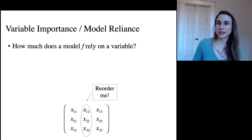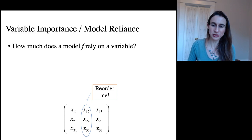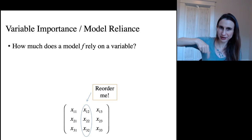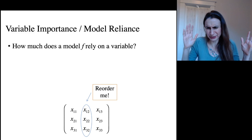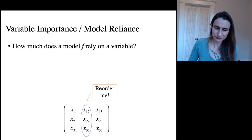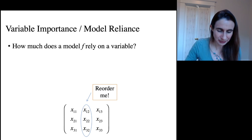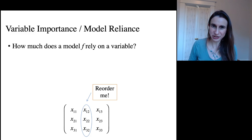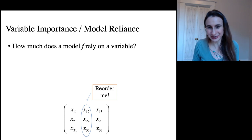What we're going to do is take the model that we have, compute the error, and then take the dataset and mess it up. We're going to mess it up by scrambling the variable we're interested in — just reordering the values of that column. You could set them to zero if you wanted, but I like to scramble them because it messes up the joint distribution but at least preserves the marginal. We mess up that variable, recompute the error, and see how much it changed. If the error doesn't change when you mess up a variable, that means the variable wasn't important. But if the error changes a lot, then the variable is important.